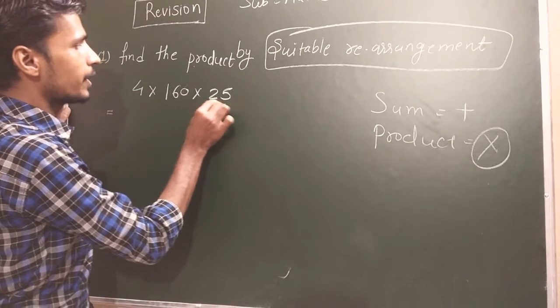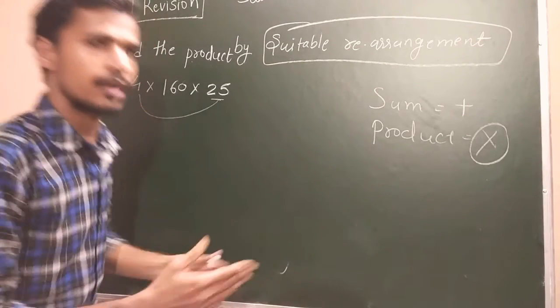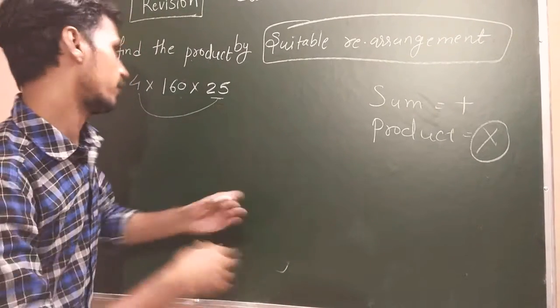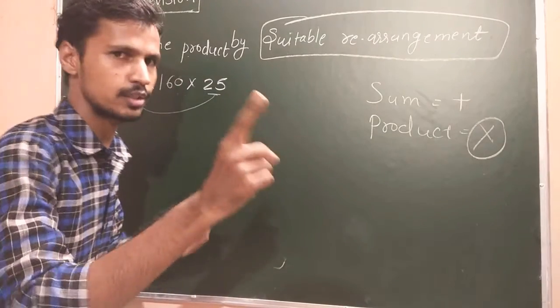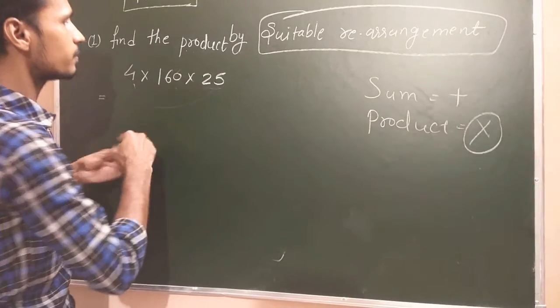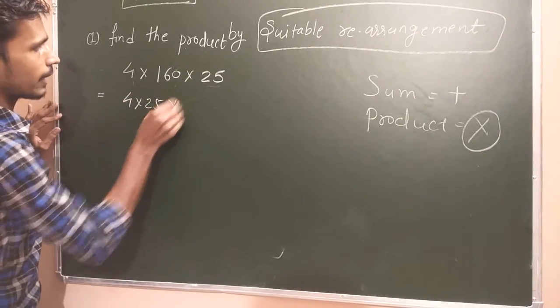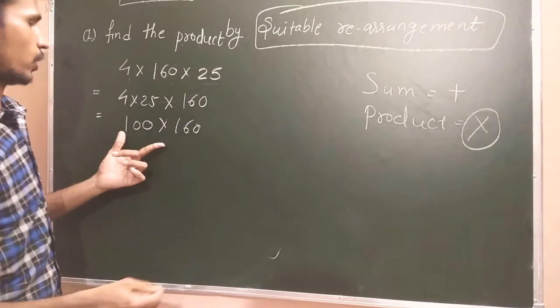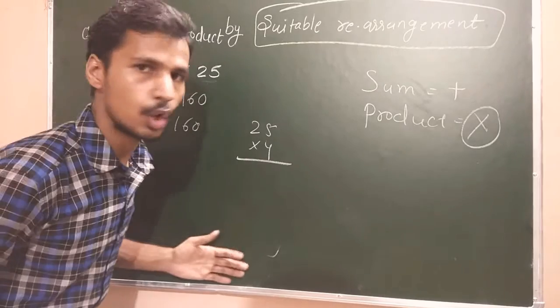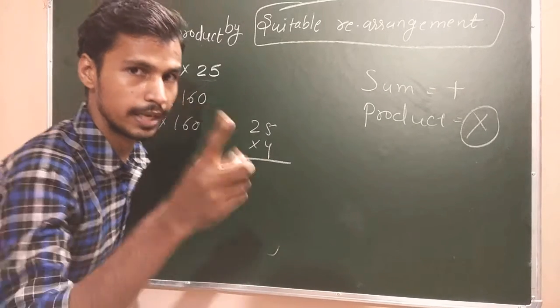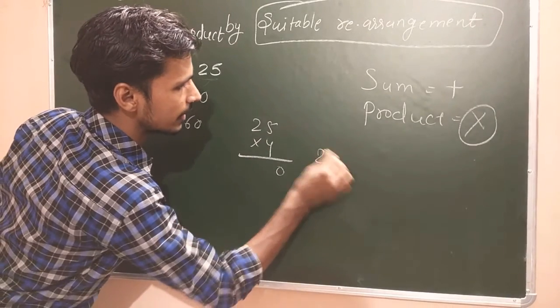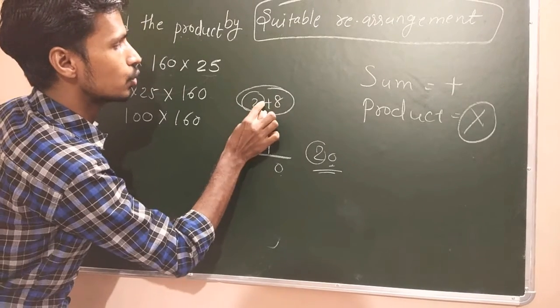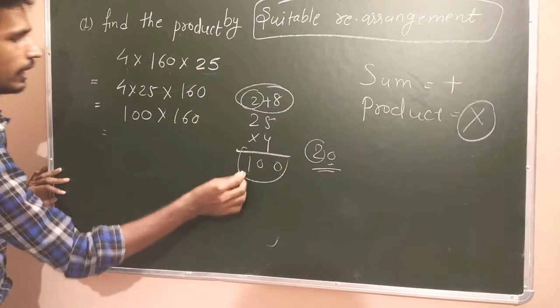If I multiply 25 by 4, it will give us 100, and 100 multiply with 160 becomes easy because we know that 100 has two zeros. So we can add zeros behind any value. So we can do the same here. 4 multiply 25 first, and 160 last. 25 multiply 4: 4 × 5 is 20, we write 0 here and 2 goes to carry. 4 × 2 is 8, and 8 plus 2 is 10. So it becomes 100.